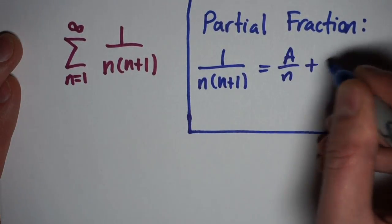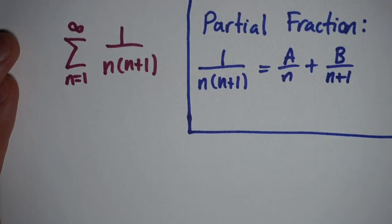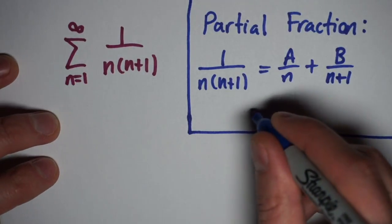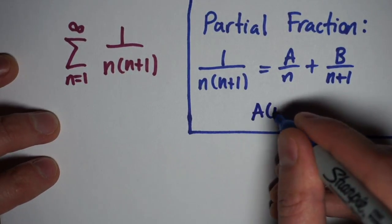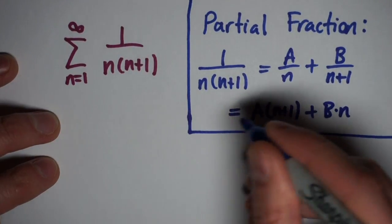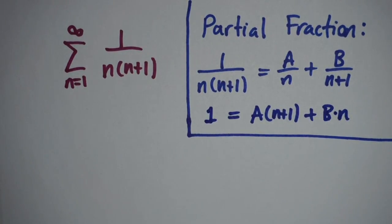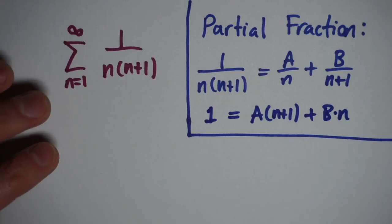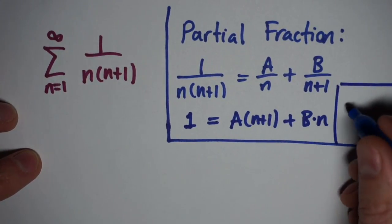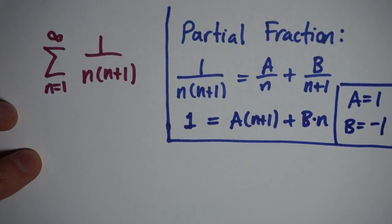So one over n times n plus one should look like a over n plus b over n plus one. If you multiply through by your denominator, what you end up with is one is equal to a times n plus one plus b times n. So this is equal to one, and I'm not going to show you the steps here, but if you go through the partial fraction steps, you get your values for a and b, and you're going to end up with a is equal to one, and b is equal to negative one.